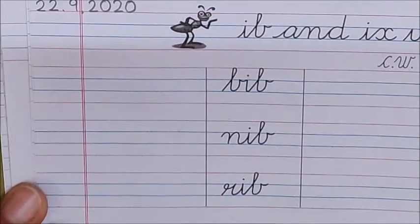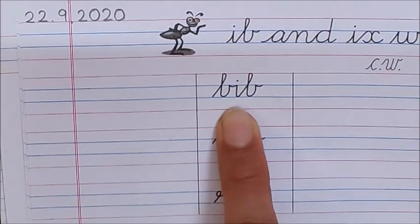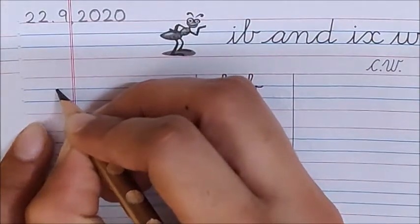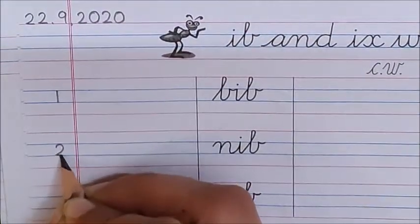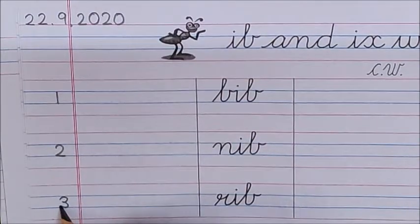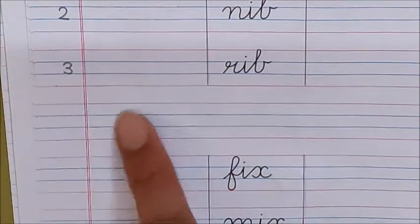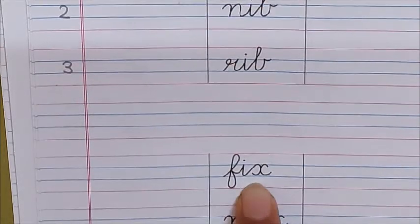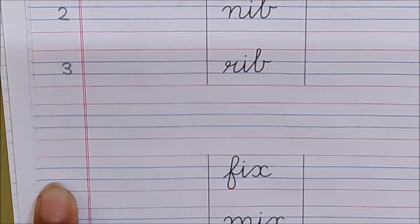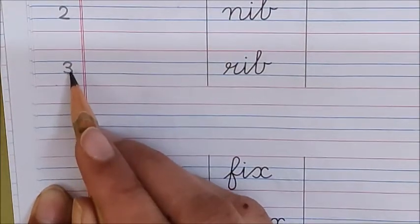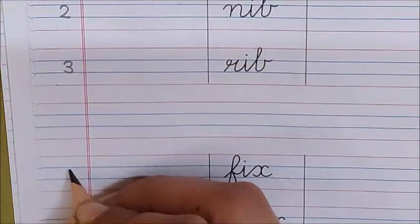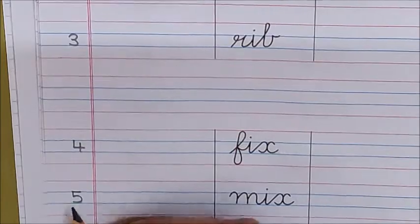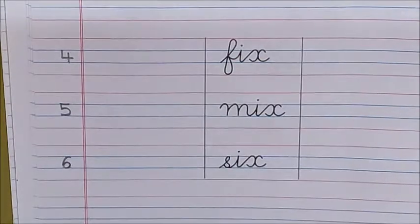Now children it's time to write numbers. Our first word is this. So here write down number one. One, two, three. Now children do you see any word here? No. So no number here. Our next word is written here. So in this line write the next number. What comes after three children? Four. Write down here. Four, five, six. Done.